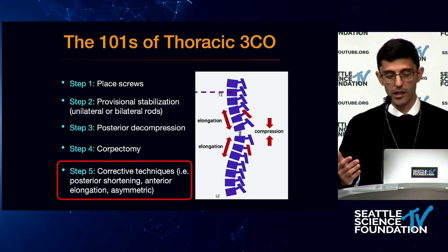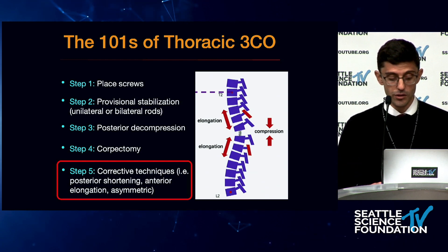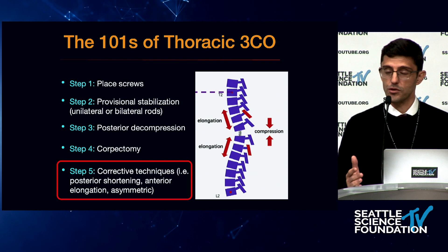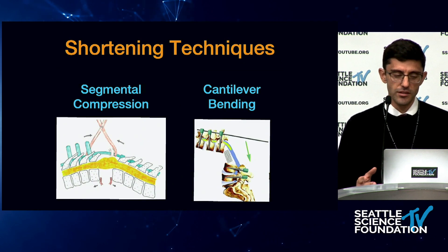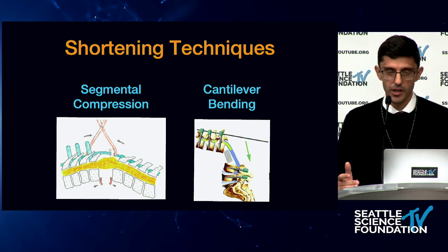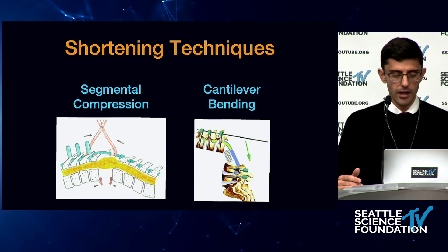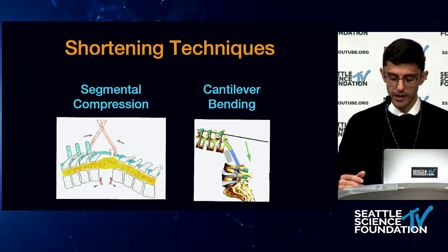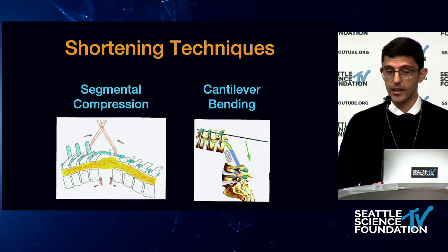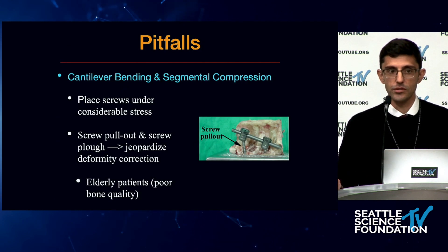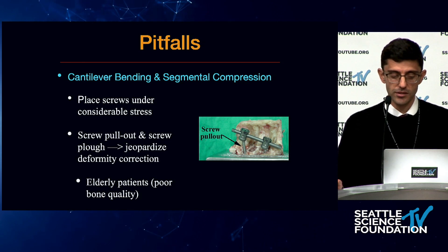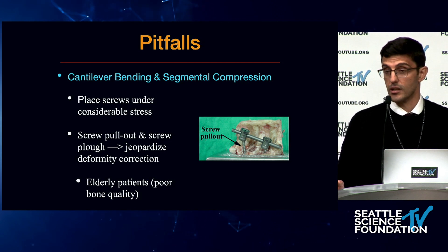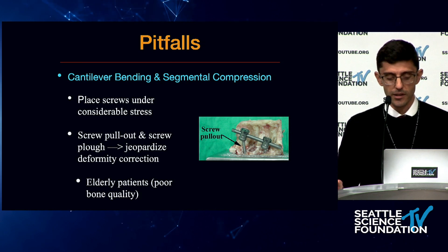Taking the ALL allows lengthening both symmetrically or asymmetrically depending on the deformity. The standard shortening techniques include segmental compression and cantilever bending, which are very powerful. The challenges, especially in elderly patients with poor bone quality, is that they place considerable stress on the individual screws because everything is happening on a segmental basis.